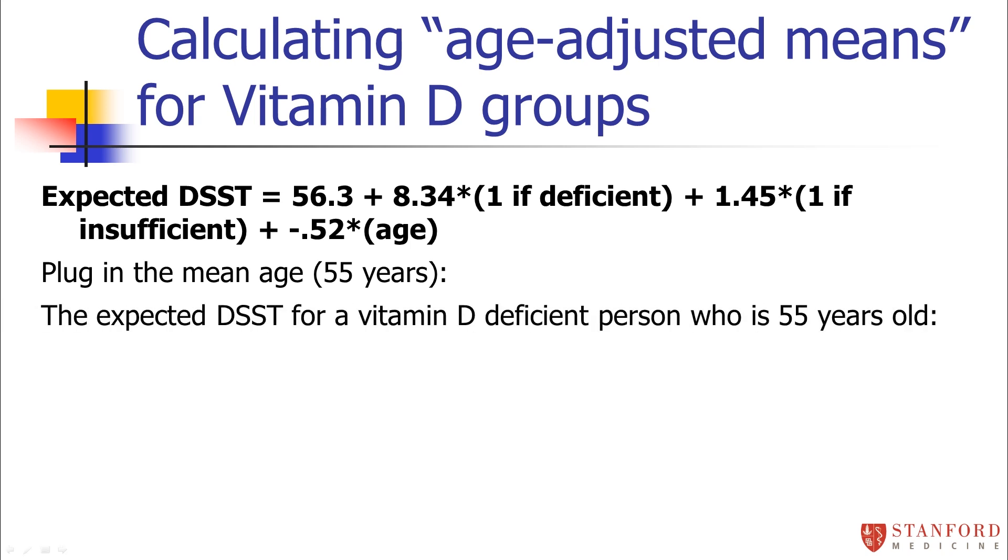So, I can get the expected average DSST value for a vitamin D-deficient person who's 55 years old by plugging all that into the model. So, we can just plug in this model to find out the expected DSST score for somebody who's vitamin D-deficient and is 55 years old. We're fixing age so that age is the same across these three groups. That person has an expected score of 36.